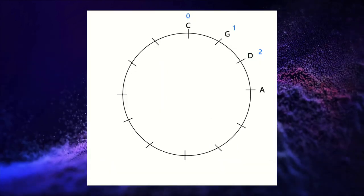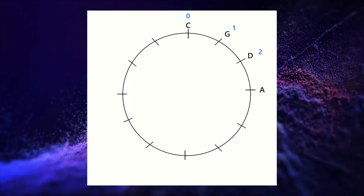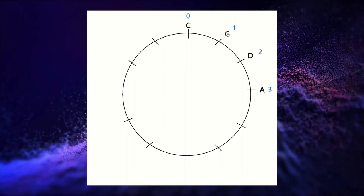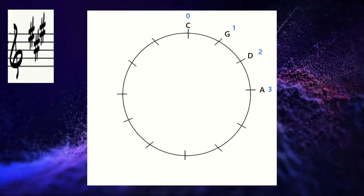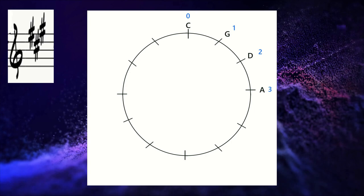All right, so I hope you got the key of A. And how many sharps are we going to have now? Three, that's right. Can you tell me which ones they are? Yep, it's F sharp, C sharp, and G sharp.